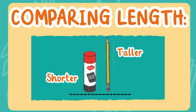Now we'll look at objects up and down instead of side to side to see their length. Let's give this one a try. The pencil is taller than the glue stick. The glue stick is shorter than the pencil.